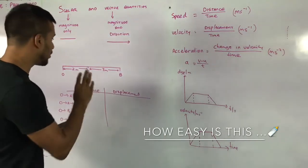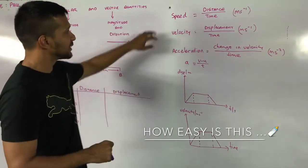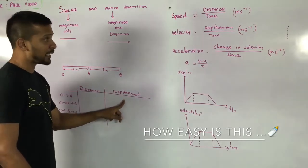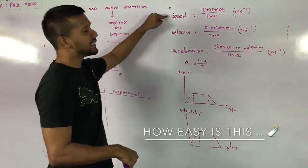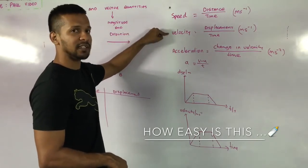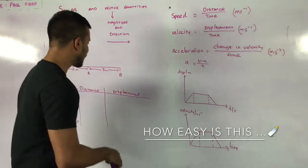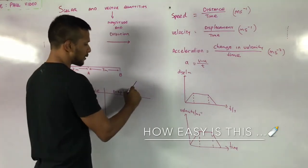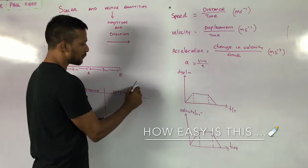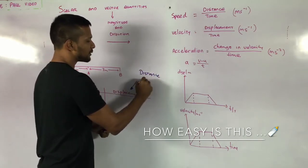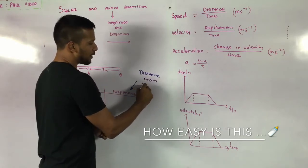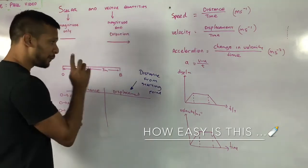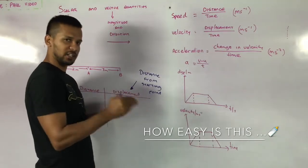We look at four quantities today: displacement, distance, speed and velocity. Distance is a scalar quantity because direction doesn't matter. Displacement is a vector quantity because direction matters. Speed is a scalar quantity. Velocity is a vector quantity. And later we look at acceleration, which is also a vector quantity. Distance is the total length travelled. Displacement is the distance from a starting point, or it could also be the distance from an equilibrium point. It's very important where you start from and the direction you are travelling in.